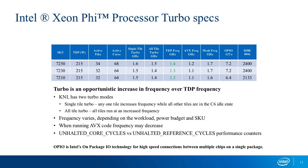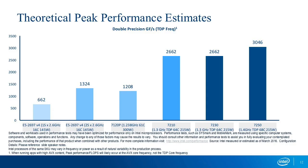Turbo mode can kick in to compensate for that frequency reduction. But turbo mode is opportunistic — there are no guarantees that you will run at turbo. It's a bonus from the architecture. We cannot guarantee all the boundary conditions needed for the frequency to actually go up.